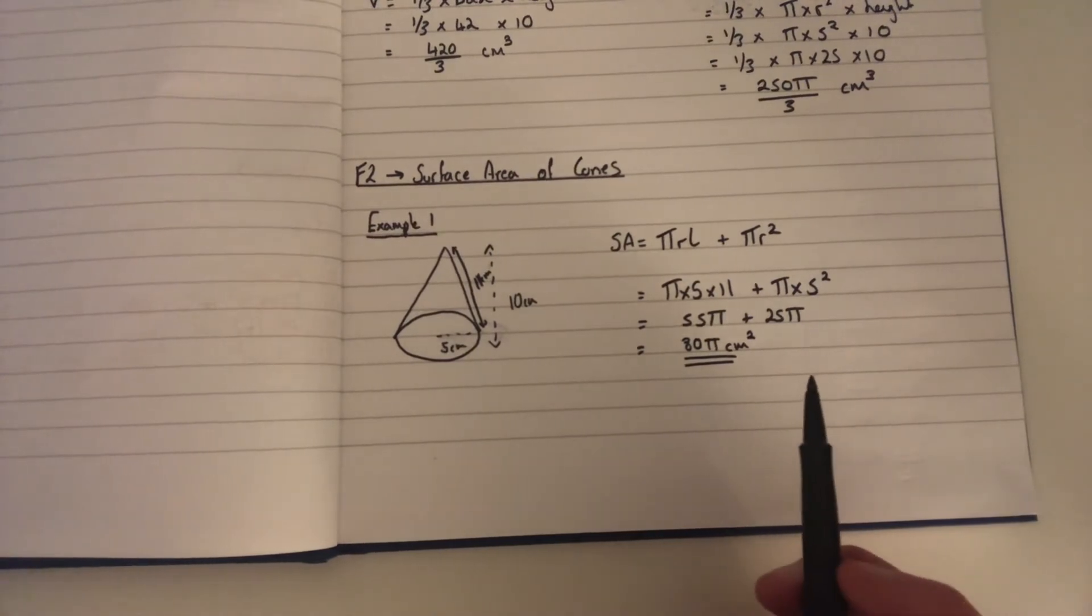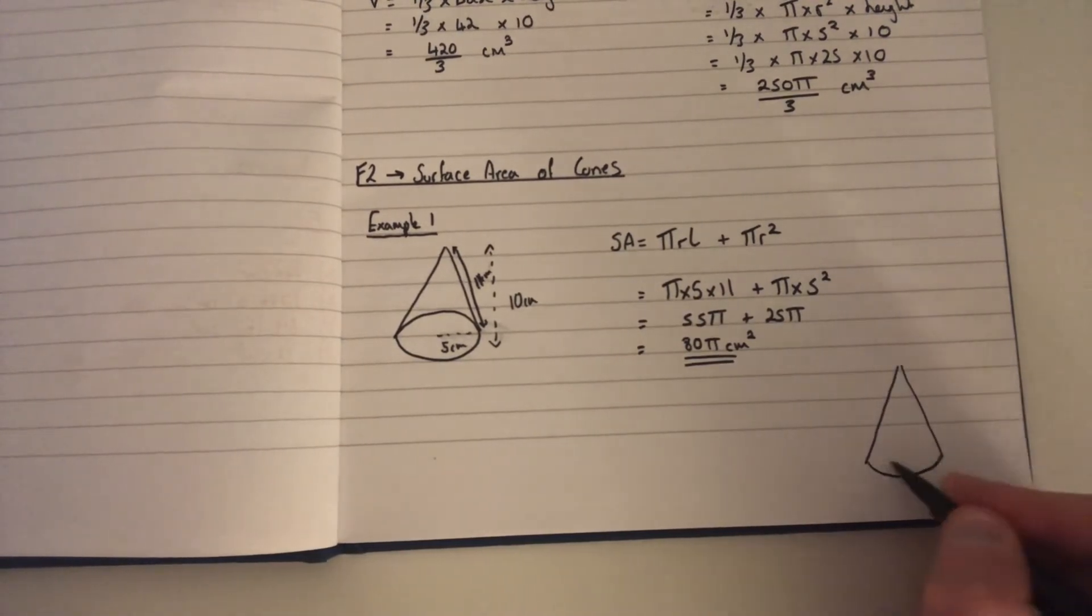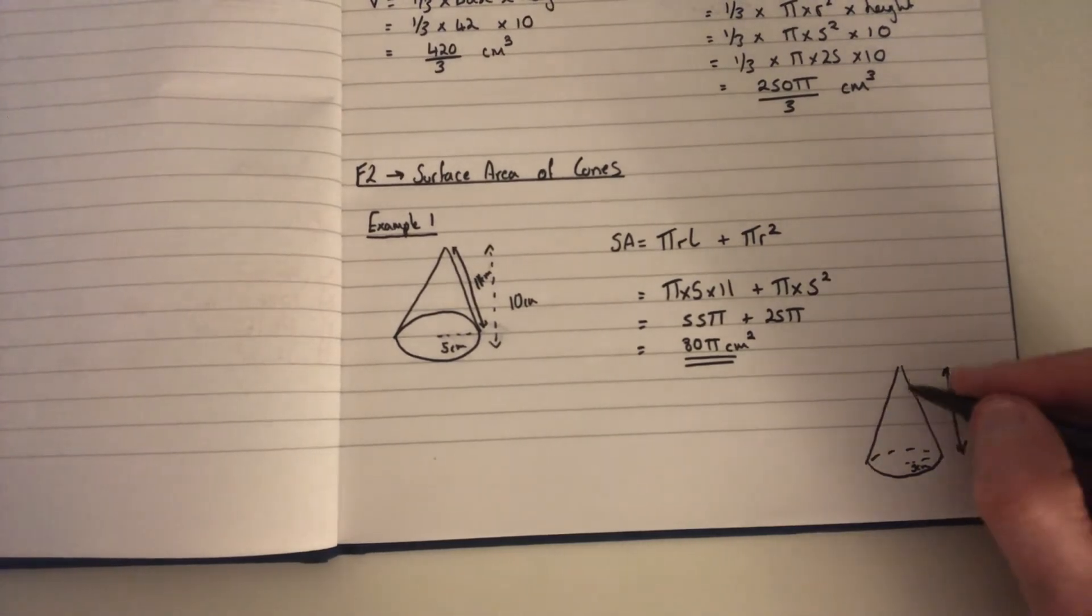Now when you go into the next two questions, you'll have something that looks like this, and you will be given the radius, which let's call 3 centimeters, but you'll be given the perpendicular height of, let's say, 10 centimeters. Now that's